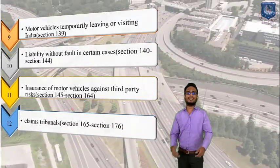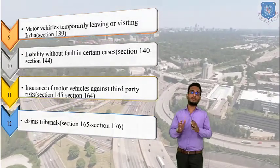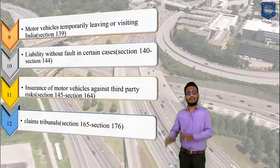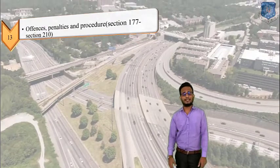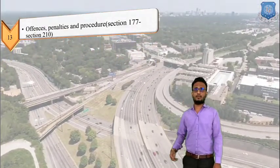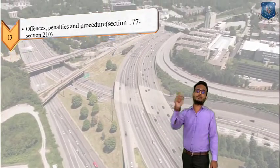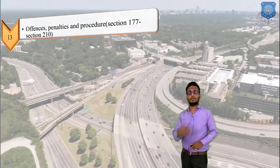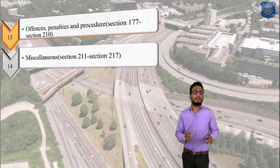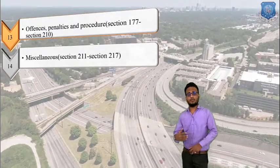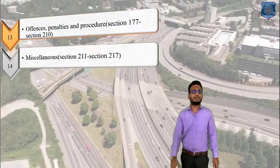Chapter number 12 covers claim tribunals, containing section 165 to section 176, which decides and gives decisions regarding motor vehicle accidents. Chapter number 13 covers offences, penalties, and procedures, with section 177 to section 219 — the most important chapter of the Motor Vehicle Act, from which many questions come in the GPSC exam. Chapter number 14 contains miscellaneous tasks not included elsewhere, described in sections 211 to 217.